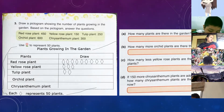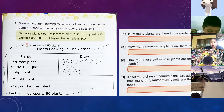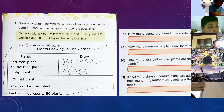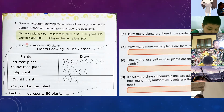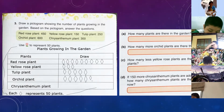Tulip plant has 250, so it's going to be five diamonds. Each diamond is 50 — so one is 50, two is 100, three is 150, four is 200, and five is 250. Next, orchid plant has 600, so that's twelve diamonds.